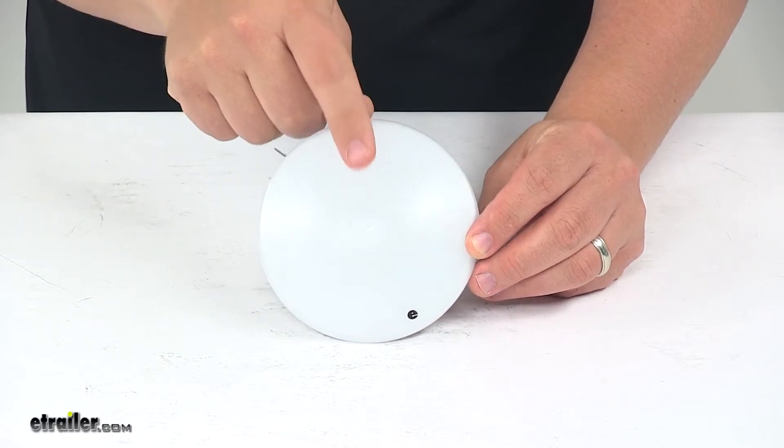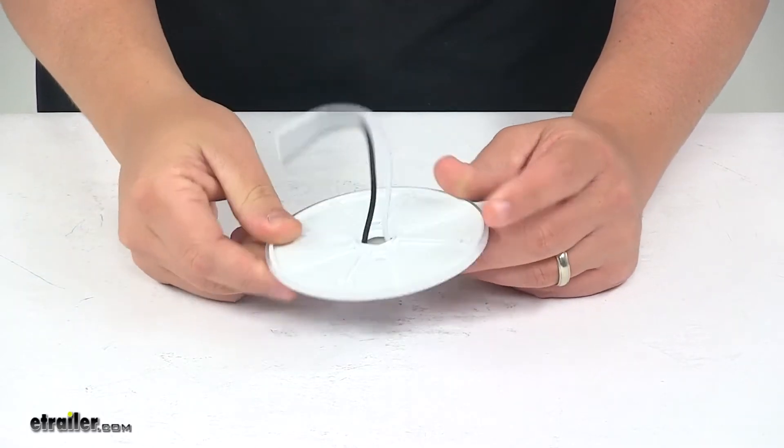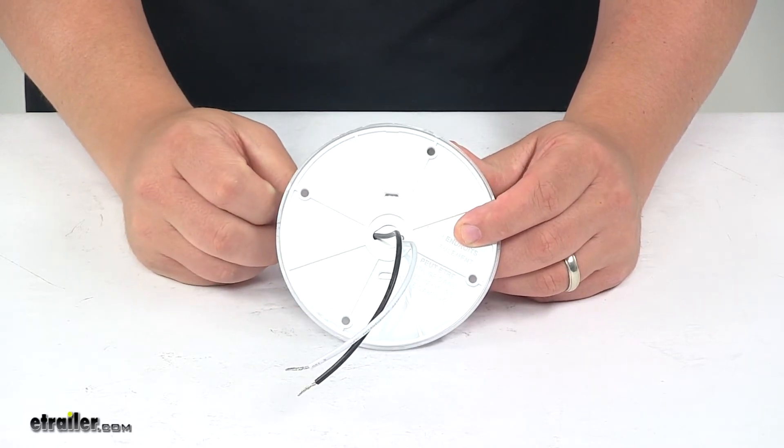This unit has the white plastic lens, it's durable and strong, and it has the white base that's made from plastic construction as well.